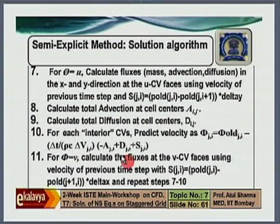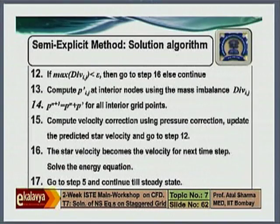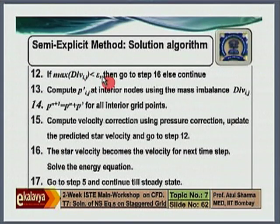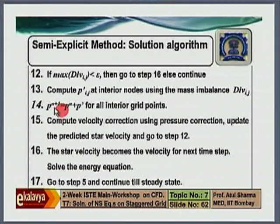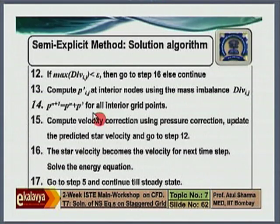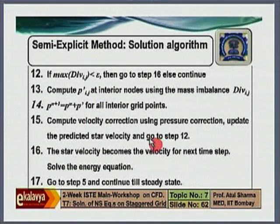With that you have predicted u velocity and v velocity. Then you check how much is the mass imbalance. If it is close to zero, then you have got the correct velocity. Otherwise, calculate pressure correction as a function of mass imbalance. Add that pressure correction to the previous pressure and get an updated value of pressure — this is the pressure tuning. Once you get a new pressure, there is a velocity correction from which you can calculate the mass flux correction, by which the predicted mass flux is updated. When you update the predicted mass flux, you get a new mass imbalance. Note that you have to go back to step 2 and steps 12 to 15 continue until mass balance occurs.